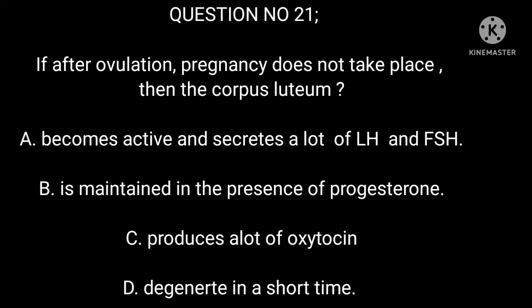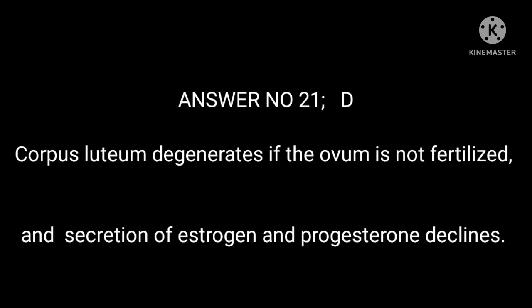Question number 21. If after ovulation pregnancy does not take place, then the corpus luteum: A. Becomes active and secretes a lot of LH and FSH. B. Is maintained in the presence of progesterone. C. Produces a lot of oxytocin. D. Degenerates in a short time. Answer number 21: D. The corpus luteum degenerates if the ovum is not fertilized, and secretion of estrogen and progesterone declines.